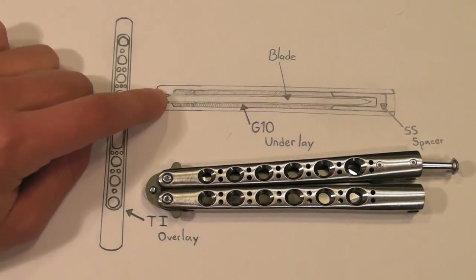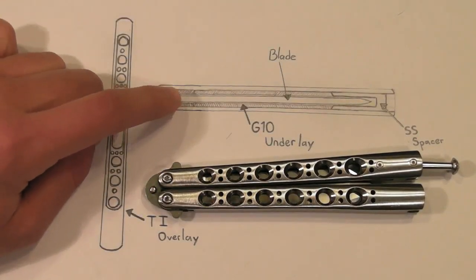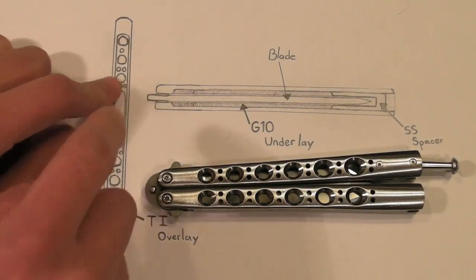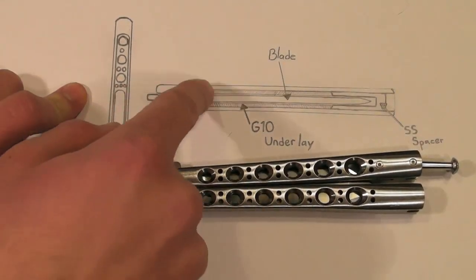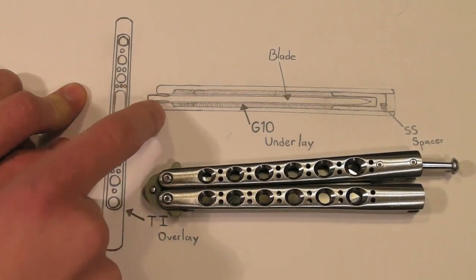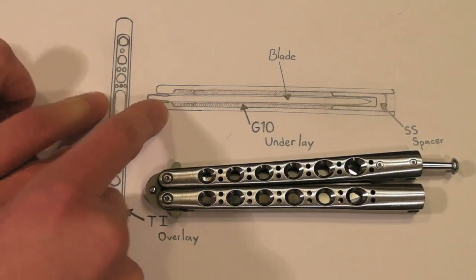But yeah, basically you have a titanium overlay over a G10 underlay, and you can see here on both sides it kind of comes back down, curls back in, so we have a stronger pivot area.